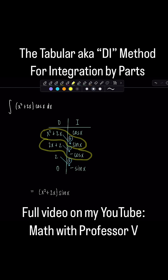Then the next diagonal product, 2x plus 2 times negative cosine x, but there's another negative. So then that's going to be positive.